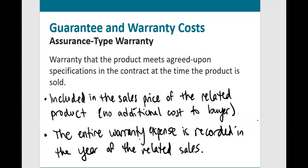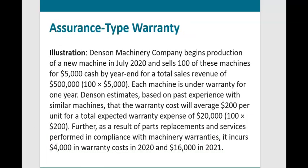For example, if Sears sells washing machines with a two-year warranty at no additional cost to the customer, in the same year that Sears records sales revenue, it estimates the cost of all repairs on those washers for the next two years. The entire two-year warranty expense is recorded in the year the goods are sold, even if repairs might be done two years out. Denison Machinery Company begins production of a new machine in July 2020, selling 100 machines for $5,000 cash each — total sales revenue of $500,000.